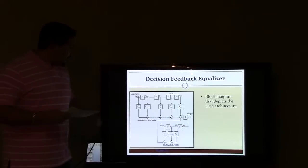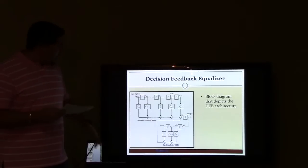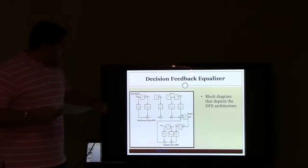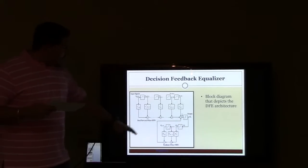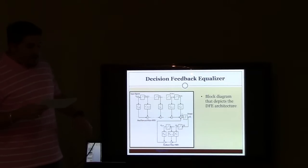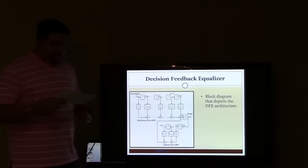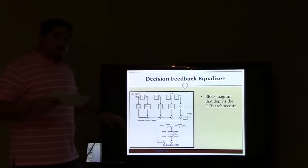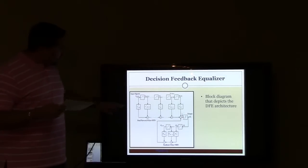The following block diagram depicts the DFE architecture. As can be seen in the figure, the decision feedback equalizer DFE is made up of a feedforward filter and a feedback filter. Basically, the symbols that are detected at the receiver are passed through the feedback filter in order for the feedback filter to estimate the ISI. After the ISI is estimated, it is subtracted from the received symbols that pass through the feedforward filter in effort of removing ISI.